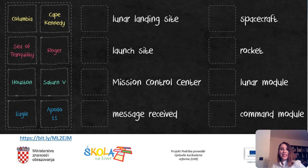Your task is to choose a name from the list and match it with what it refers to. The names are: Columbia, Sea of Tranquility, Houston, Eagle, Cape Kennedy, Roger, Saturn 5, and Apollo 11.